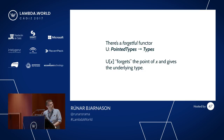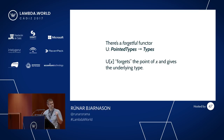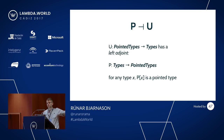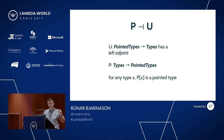We can do this because we can always go from pointed types to types using a forgetful functor U that forgets the point. That functor has a left adjoint P, which goes from types to pointed types. For any type X, P gives us P of X, a pointed type.